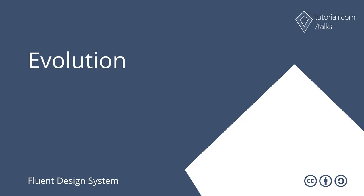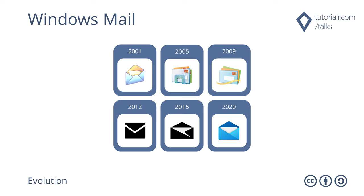Fluent Design System is the latest in the evolution of design language from Microsoft. Windows Mail has had a variety of icons over the years, from 2001 through to 2012, where it used the modern design language, then known as Metro, introduced with Windows 8.